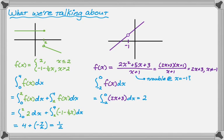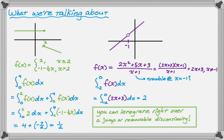So the takeaway from the video is you can actually just integrate right over a jump or a removable discontinuity. Kind of have to deal with them differently, right? So jump discontinuity, break it into pieces, do each piece and add those up. A removable discontinuity, just straight go for it.